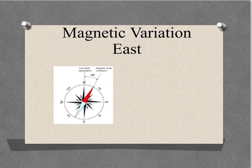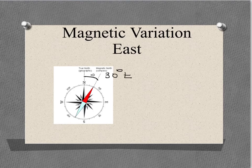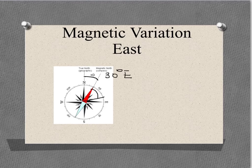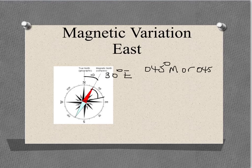The first diagram shows a variation to the east from true north to magnetic north, and this variation is an angle of 30 degrees in the easterly direction. If we were on a ship and wanting to take a bearing to a landmark, our needle would point to magnetic north and follow a clockwise direction to our object. The compass would read 45 degrees, and we would write this as 045 degrees M, or 045 degrees C, meaning that our compass bearing was 45 degrees from magnetic north.